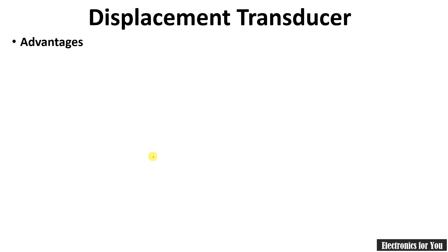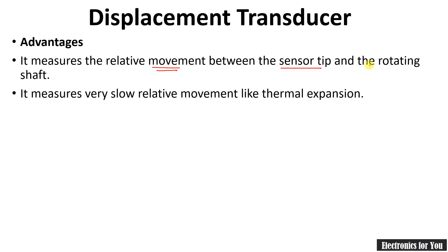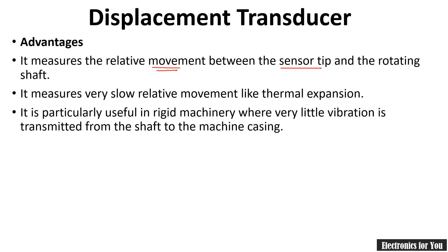The advantages of the displacement transducer: it measures the relative movement between the sensor tip and the rotating shaft. It measures very low relative movement like thermal expansion. It is particularly useful in rigid machinery where little vibration is transmitted from the shaft to the machine casing.